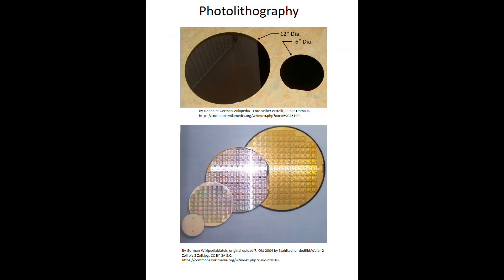It all starts with a silicon wafer, shown in the top picture here. They come in either 300 millimeter diameter or half that size. It's just pure silicon sliced half a millimeter thick from a boule of silicon, which is a three-dimensional long crystal of silicon.